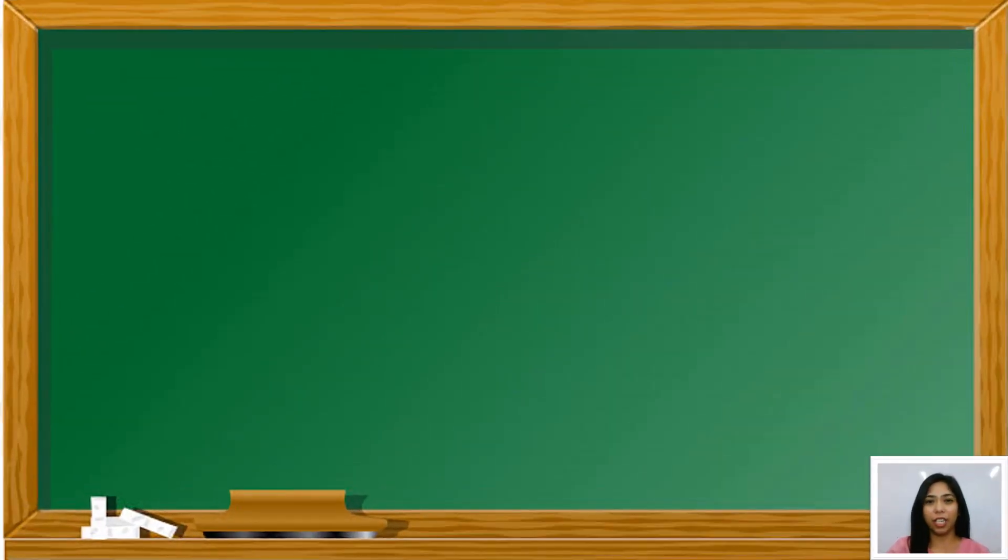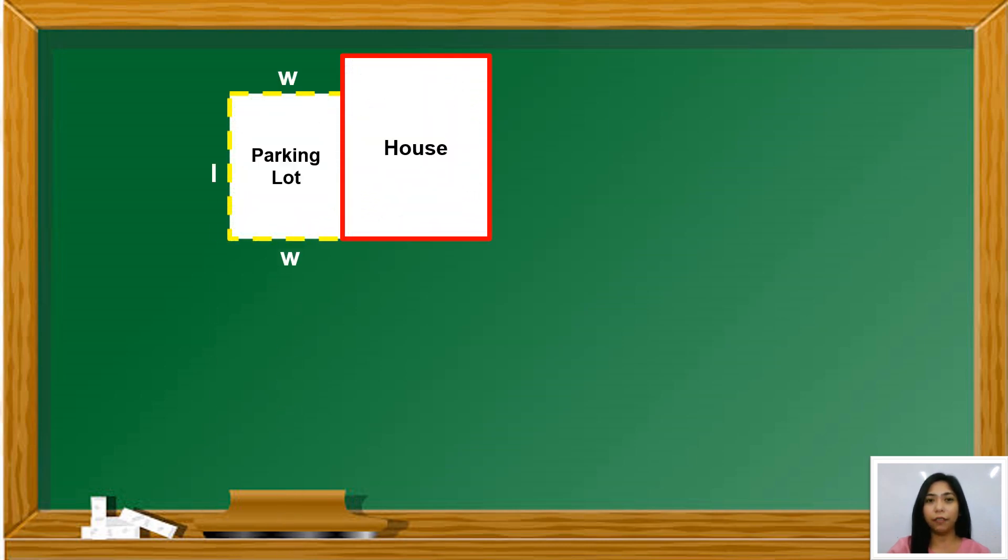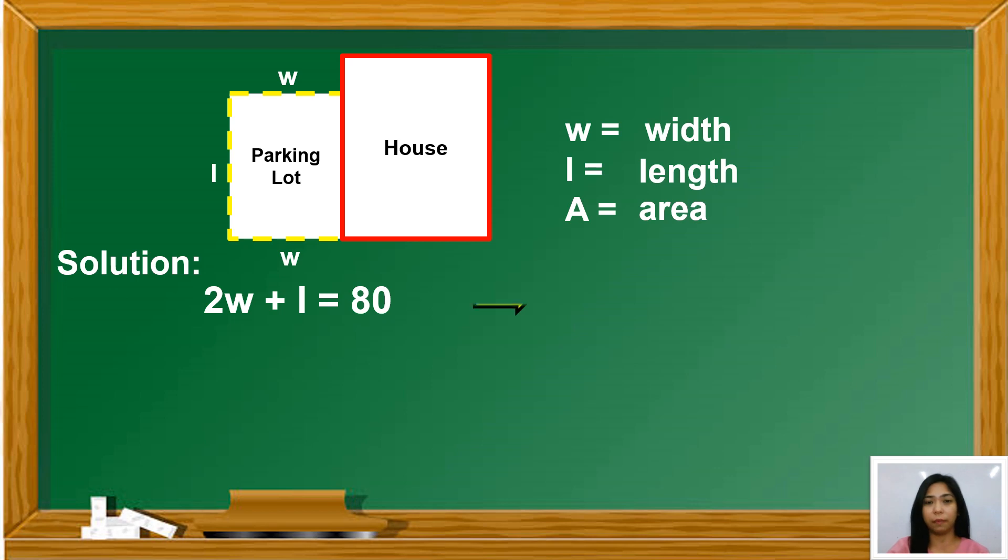So this is the illustration of the rectangular parking lot beside the house. In the figure, if we let W be the width and L be the length and A be the area, what is the expression for the sum of the measures of the three sides of the parking lot? So our solution? We are going to get the sum of the three sides. The result is 2W plus L equals 80. So that is the equation of the three sides.